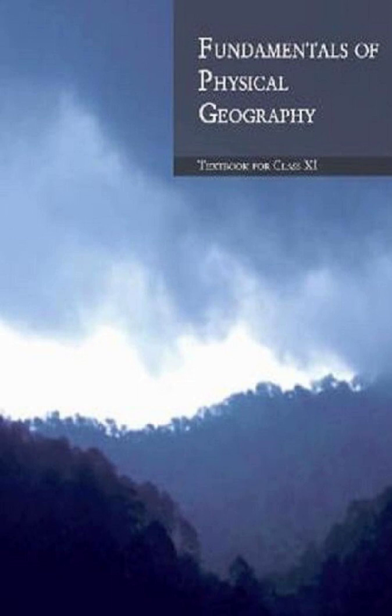Tillite is the sedimentary rock formed out of deposits of glaciers. The Gondwana system of sediments from India is known to have its counterparts in six different land masses of the southern hemisphere. At the base, the systems have thick tillite indicating extensive and prolonged glaciation. Counterparts of this succession are found in Africa, Falkland Island, Madagascar, Antarctica and Australia. The overall resemblance of the Gondwana type sediments clearly demonstrates that these land masses had remarkably similar histories. The glacial tillite provides unambiguous evidence of paleoclimates and also of drifting of continents.